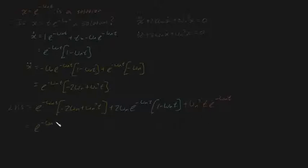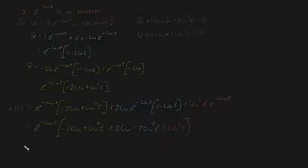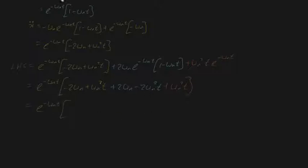Grouping the e to the minus omega n t terms out, we're left with: minus 2 omega n plus omega n squared t, plus 2 omega n minus 2 omega n squared t, plus omega n squared t. We can see that minus 2 omega n and plus 2 omega n cancel, and the omega n squared t terms — plus omega n squared t, minus 2 omega n squared t, plus omega n squared t — also cancel, leaving us with a resounding 0. So the left-hand side equals the right-hand side.